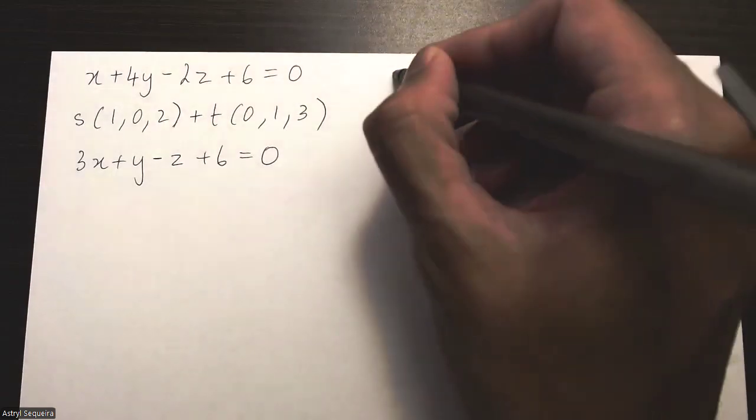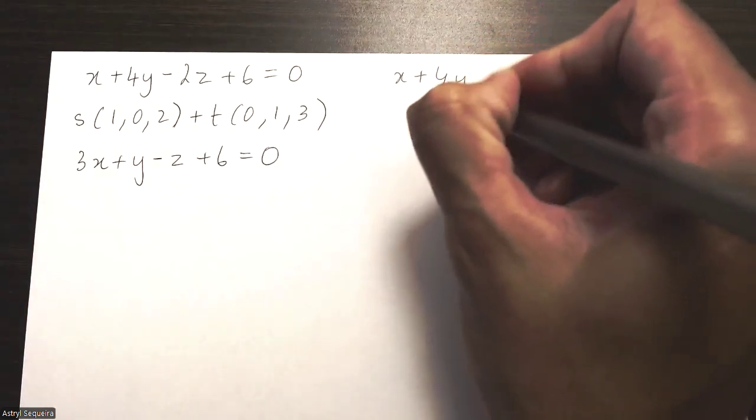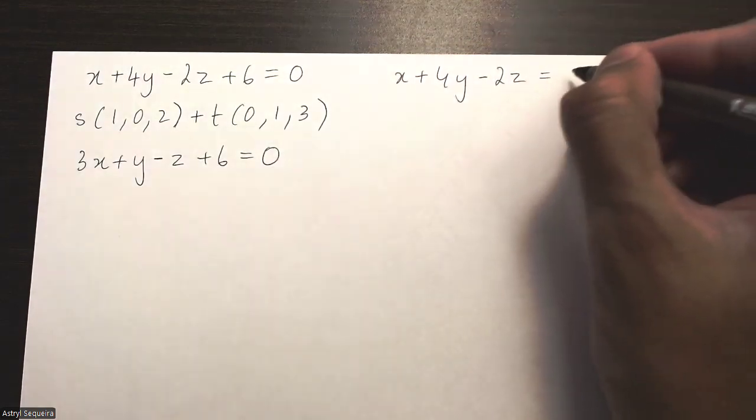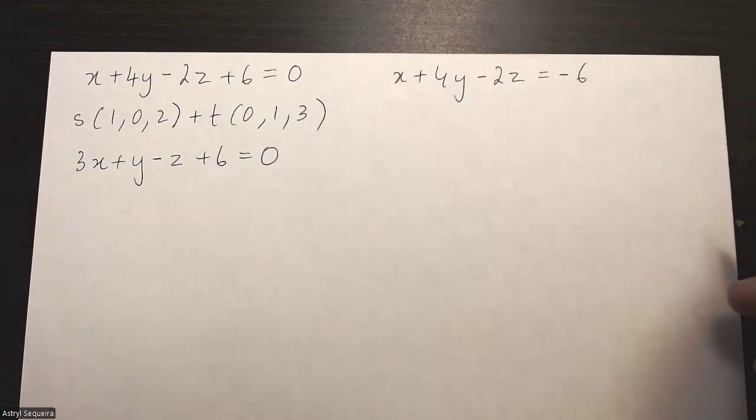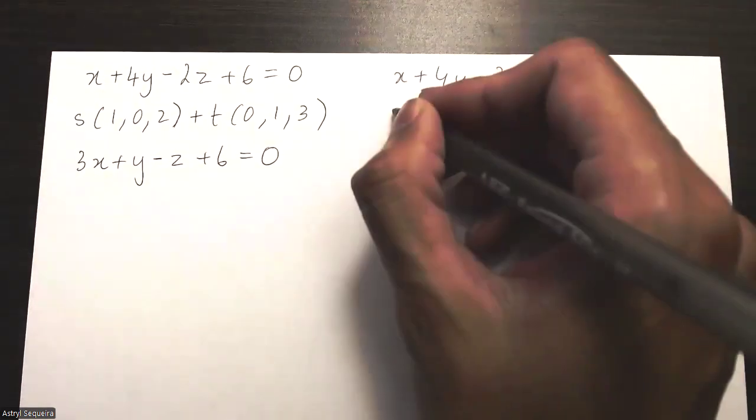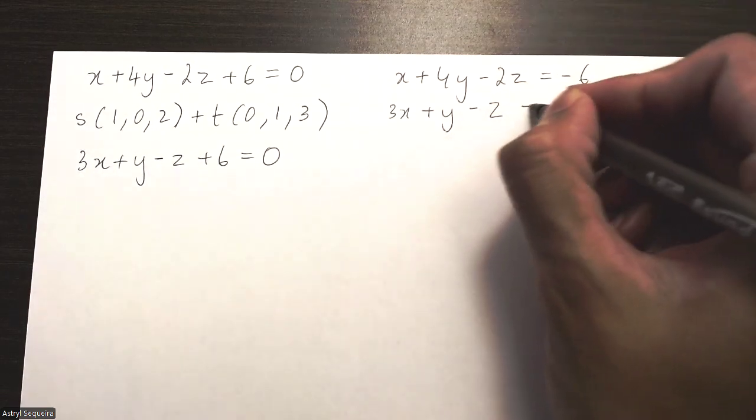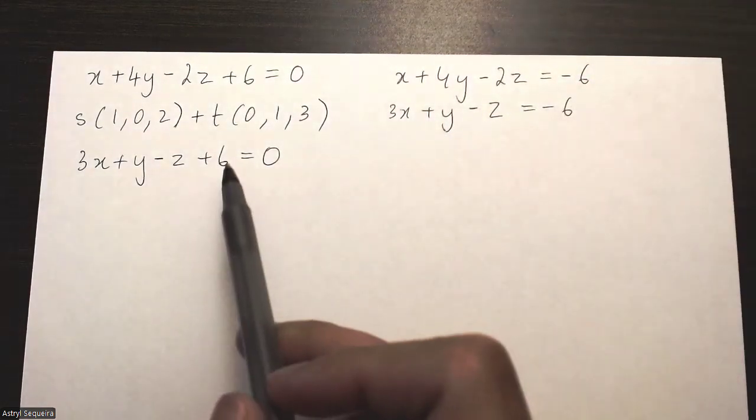And then I'm going to use a matrix to solve it. So it's x plus 4y minus 2z equals negative 6, and 3x plus y minus z also equals negative 6. So I just moved the plus 6 in both these equations to the other side.